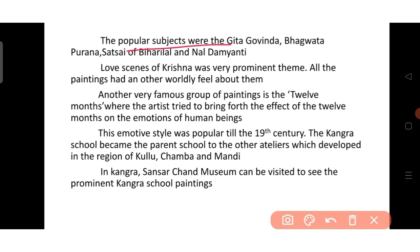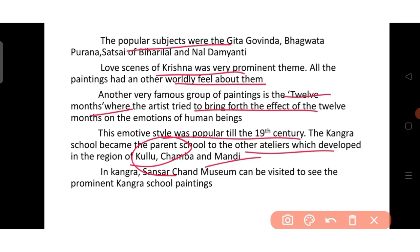The popular subjects of Kangra school were the Gita Govinda, Bhagavata Purana, Satsai of Bihari Lal and Nala-Damayanti. Love scenes of Krishna were a very prominent theme and all the paintings had a worldly feel about them. Another famous group of paintings is the Barahmasa, where the artist tried to bring forth the effect of 12 months on the emotions of human beings. This emotive style was popular till the 19th century, and the Kangra school became the parent school to ateliers in Kullu, Chamba and Mandi. The Sansar Chand Museum in Kangra can be visited to see prominent Kangra school paintings.